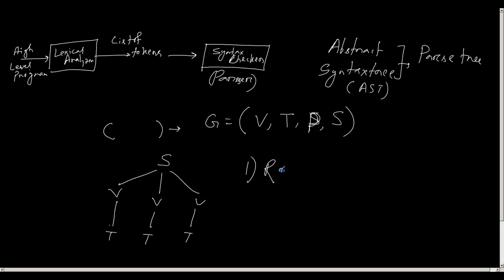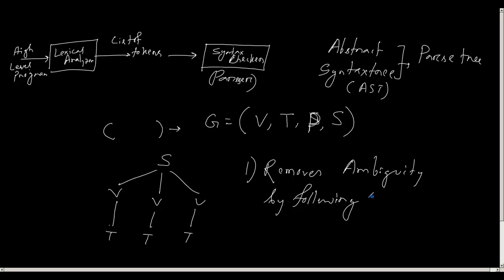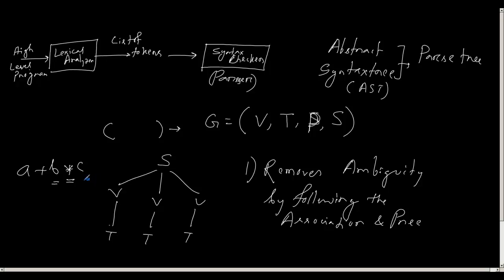The syntax checker removes ambiguity by following association and precedence rules. For a simple example: suppose a + b * c. The C language tells me that the multiplication operator has higher precedence, and hence b should be attached to multiplication rather than plus. In this way the language removes ambiguity, and the syntax tree is created following those rules.